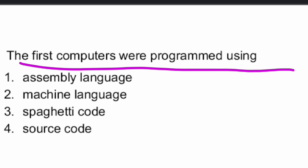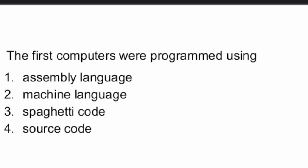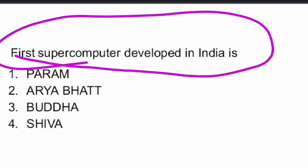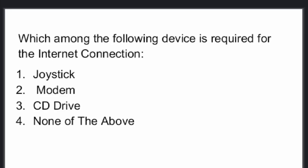The first computers were programmed using machine language — option two is the right answer. The first supercomputer developed in India was PARAM — P-A-R-A-M.